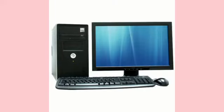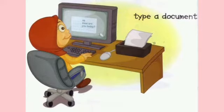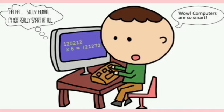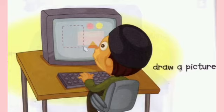A computer is like a magic machine — it can do a lot of things for you. The first function of a computer is: we can type letters, words, sentences, numbers, and messages on the computer. The next function is: a computer can calculate difficult sums quickly and accurately.